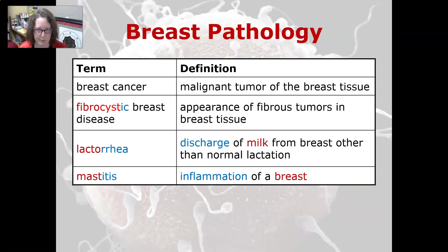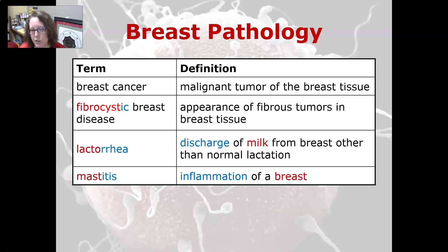Breast pathology: breast cancer is a malignant tumor of the breast tissue. Fibrocystic breast disease is the appearance of fibrous tumors in breast tissue. Galactorrhea is a discharge of milk from breasts other than during normal lactation. Mastitis is inflammation of a breast.